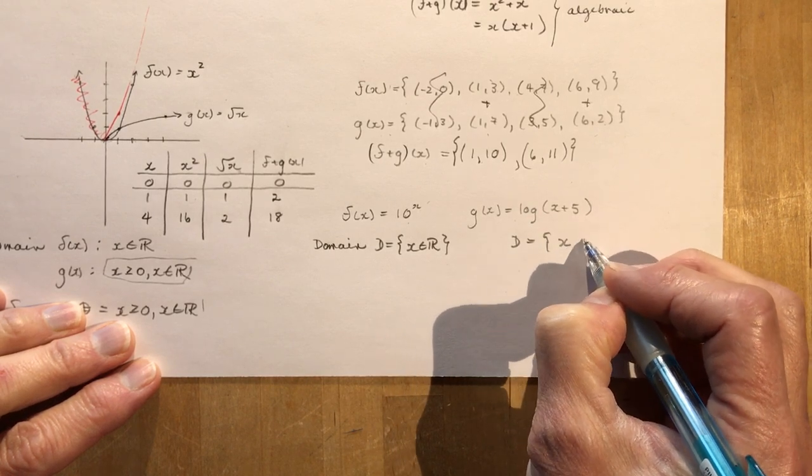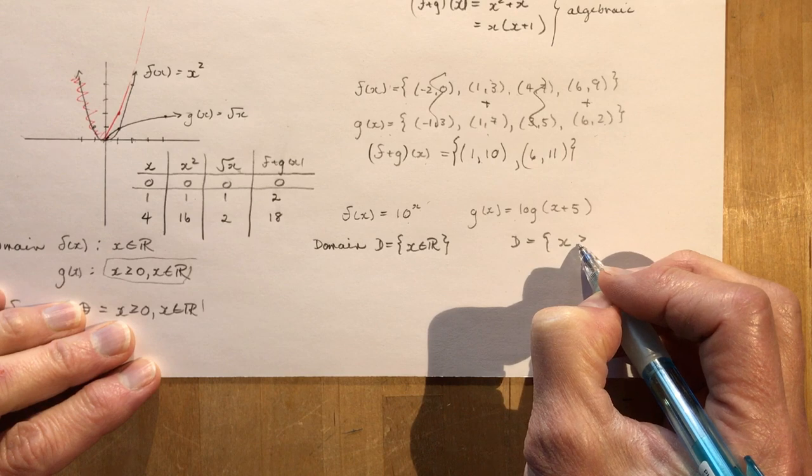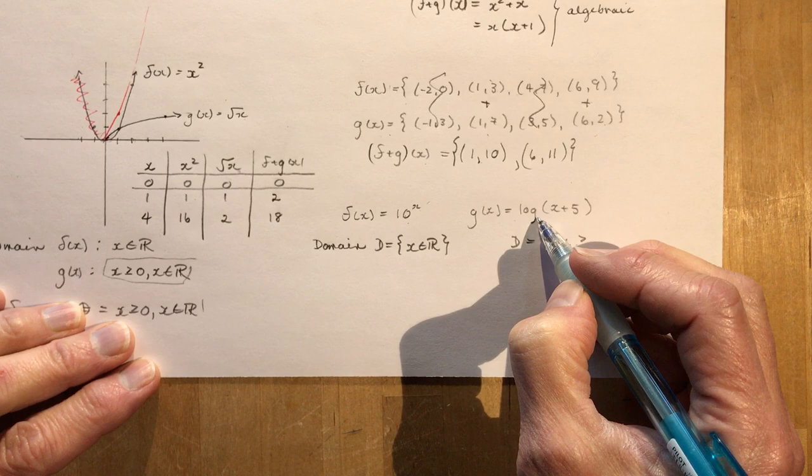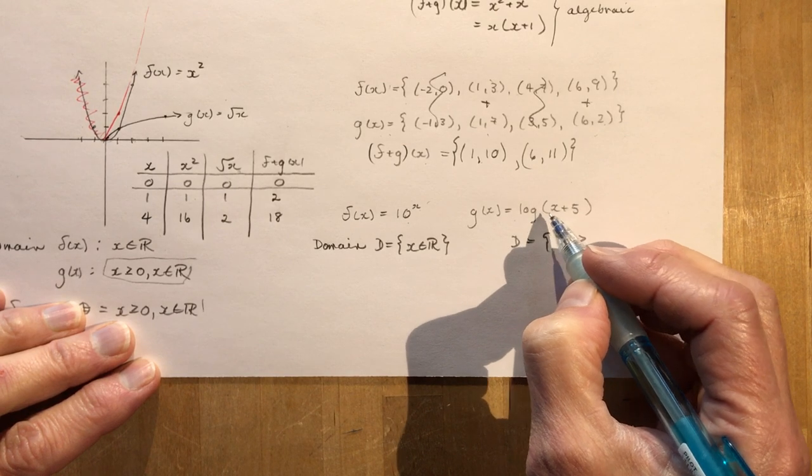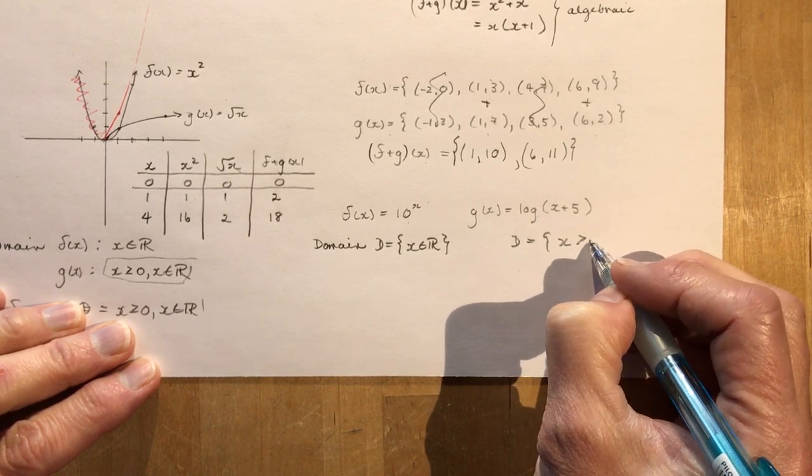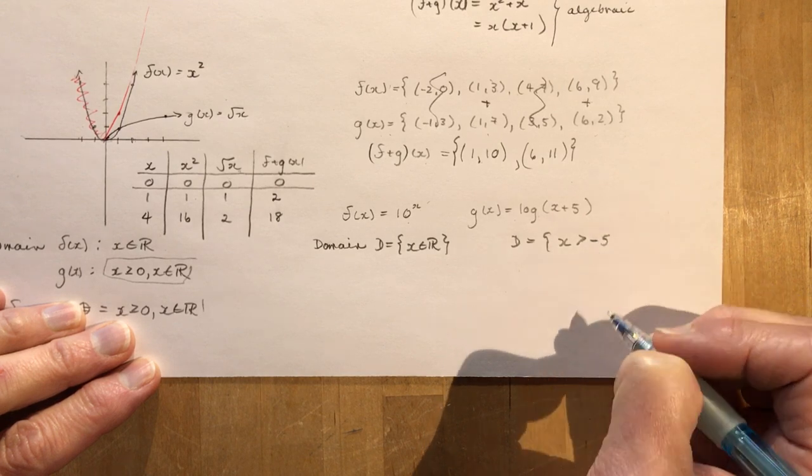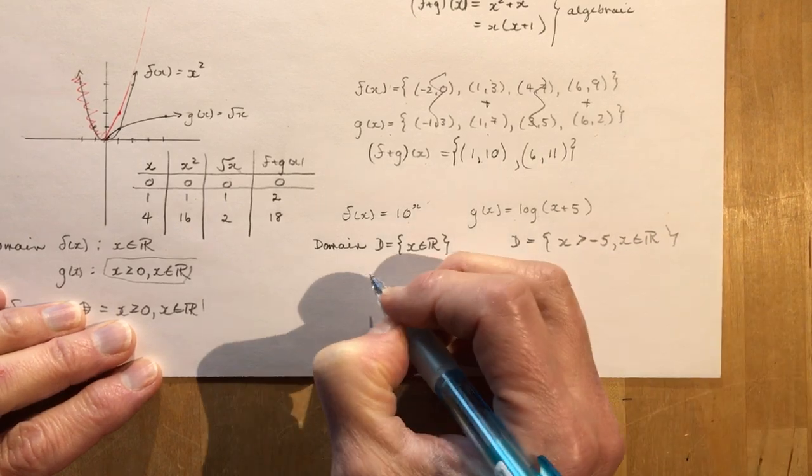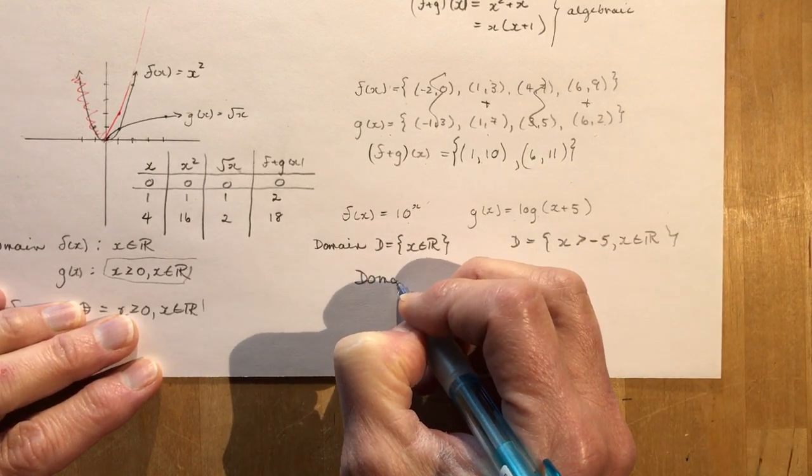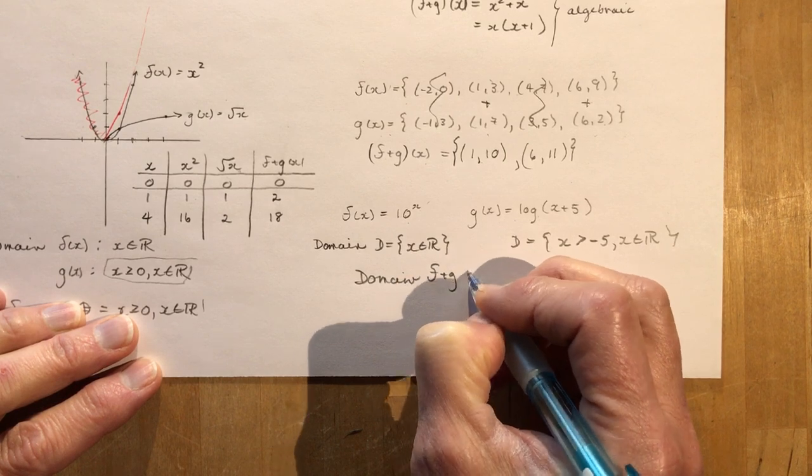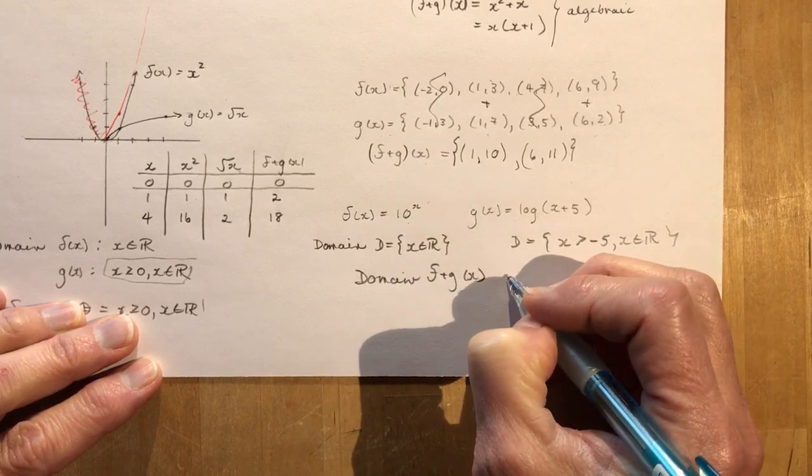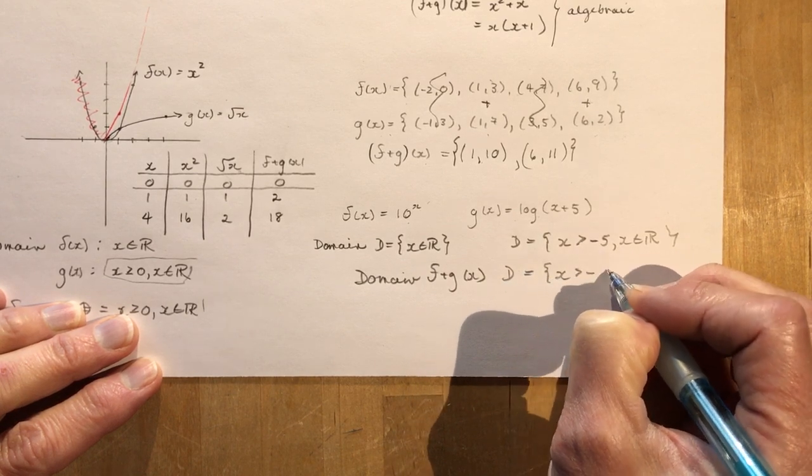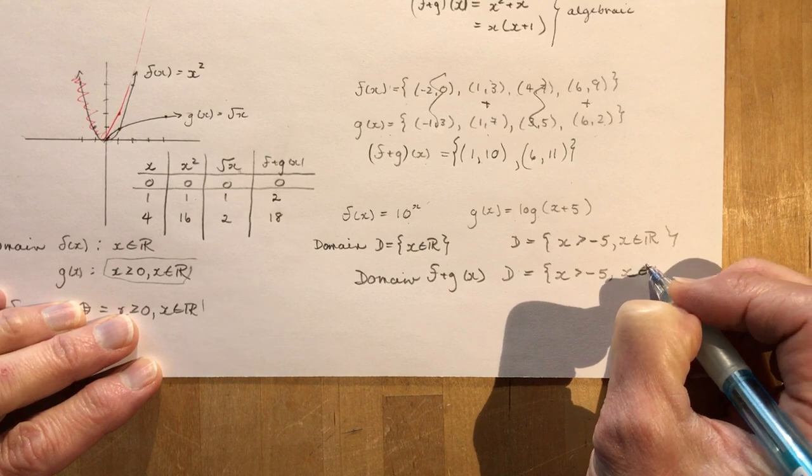So this domain for this one would be x is greater than or equal to, no, it can't be 0. We can't take the log of 0. 10 to some number gives a 0? No. So it has to be greater than negative 5. So that means the domain for f plus g at x is going to be this one: x is greater than negative 5, x is an element of real numbers.